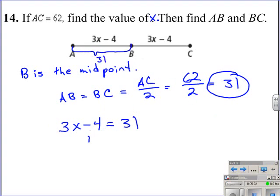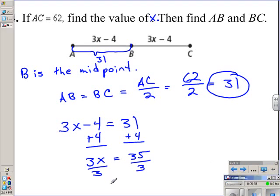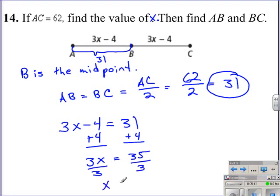Now we just have an equation to solve. We solve it by adding 4 to both sides, leaving us with 3x is equal to 35, and we divide both sides by 3. So x is going to be equal to 11 and two-thirds, or 11.6666 repeating, or 11.7 if we round the value.